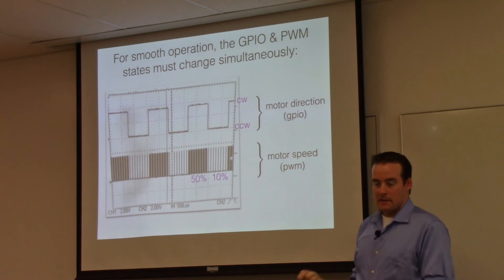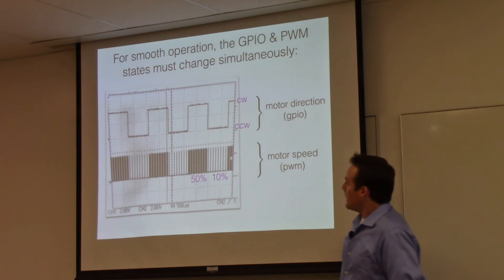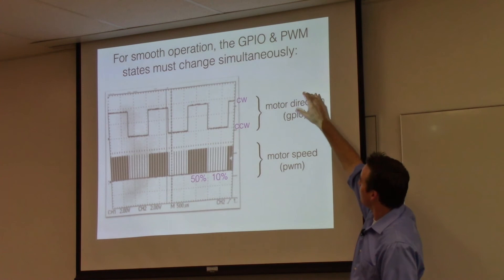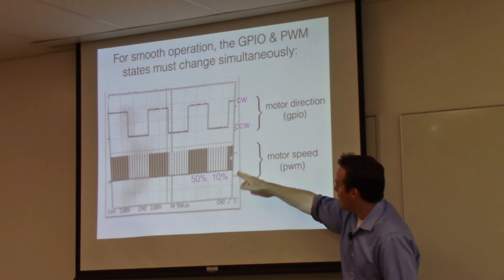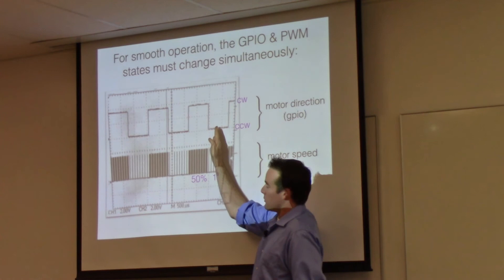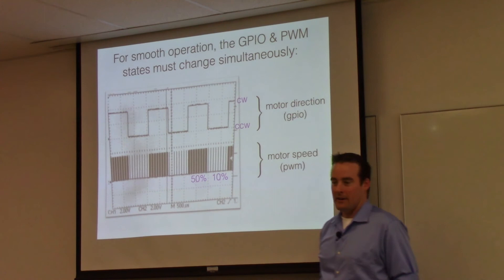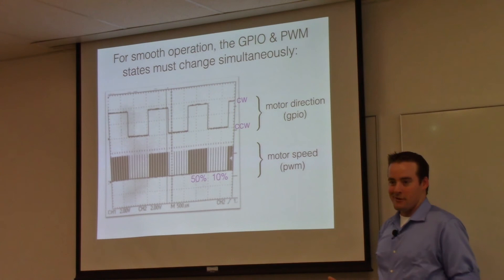The point is that there is not an atomic operation in this system that allows you to change the GPIO and the PWM at the same time. That means that if you are writing a program, your controller at some point is going to have to say, okay, now please set the GPIO pins to 1 to make it go clockwise, and then please set the PWM to 10%. If those two things don't happen pretty close together, you're going to have a bad time. You're going to switch the direction of the motor without changing the speed the way that you thought.